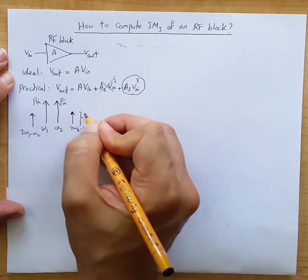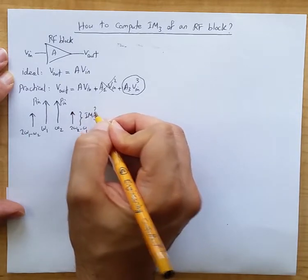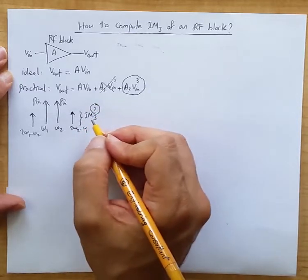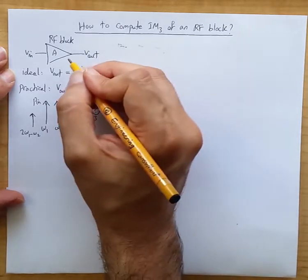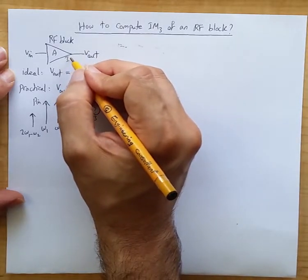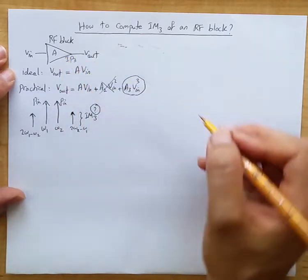The power of these guys in dB, IM3, we are interested to be able to compute or approximate the power of this component as a function of PN and as a function of IP3 or third-order intercept point of this RF block.